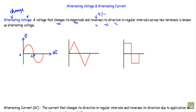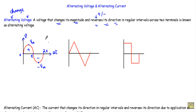From 0 to T/2, the voltage will have positive values. At the start the value is 0, then it reaches its positive maximum value, and then returns to 0. From T/2 to T, the voltage goes through the negative half cycle, where its negative maximum is minus Vm, and at T the value returns to 0. This confirms that our alternating voltage changes its magnitude and also reverses its direction.